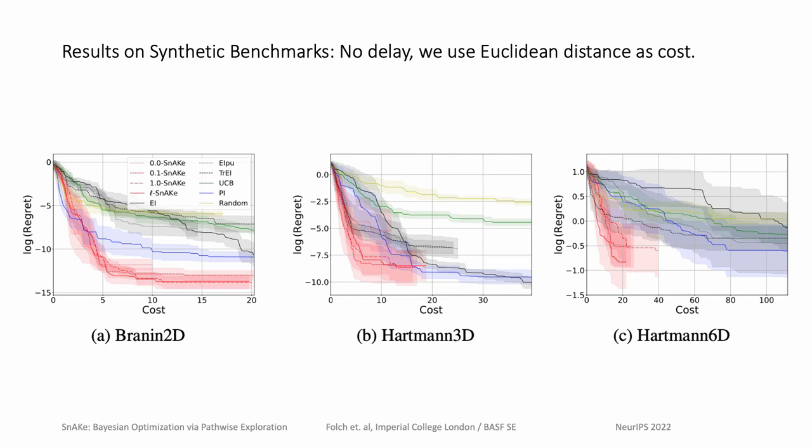I will now present experimental results. We begin with a synthetic benchmark without delay. On the y-axis, we have log regret, a measure of how close we were to the optimum. We want to minimize this as much as possible. On the x-axis, we have the cost required to achieve such a regret. Different variations of SNAKE can be found in red. And for each case, we can see that SNAKE achieves regret similar to the best method, but at significantly lower costs.